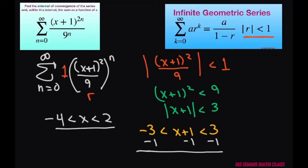This is your interval of convergence. So that's your interval of convergence is negative four comma two.